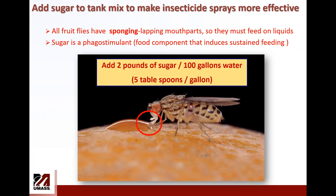A question from Lindsay: since spotted wing drosophila are drawn to your grape juice solutions, do you think planting Concord grapes on the perimeter of crops would pull them to those grapes and away from the target crop — essentially trap cropping? I think it would be more problematic. It would take a long time to research, and I would find this difficult to implement by growers. I don't think it would be feasible to use grapes as a trap crop for this insect.